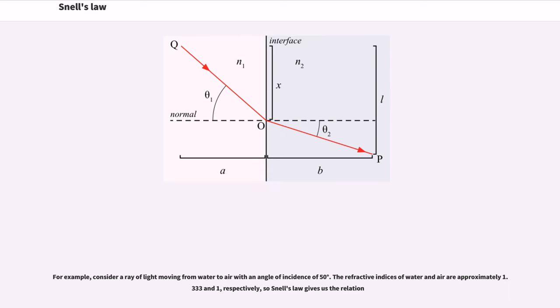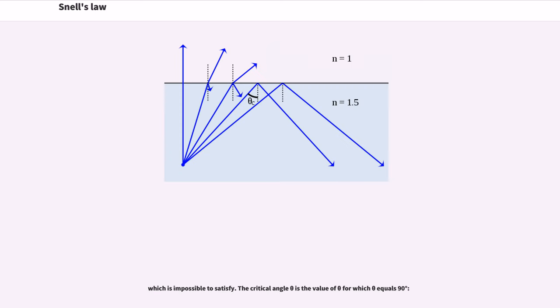For example, consider a ray of light moving from water to air with an angle of incidence of 50 degrees. The refractive indices of water and air are approximately 1.333 and 1 respectively, so Snell's law gives us the relation, which is impossible to satisfy. The critical angle theta is the value of theta for which theta equals 90 degrees.